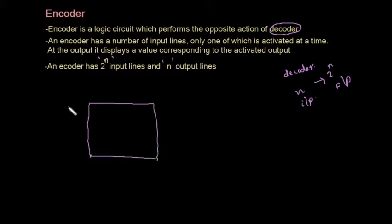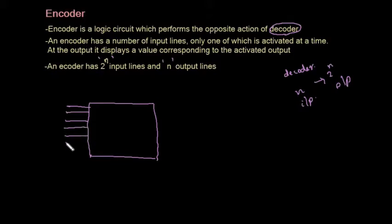Suppose an encoder whose inputs are i0, i1, i2, i3, i4, i5, i6, and i7.